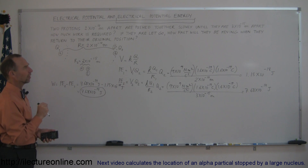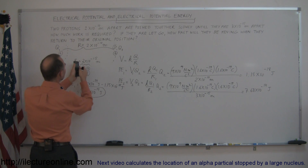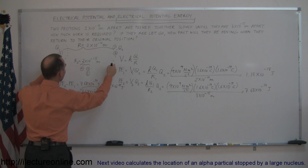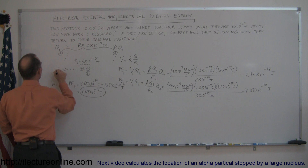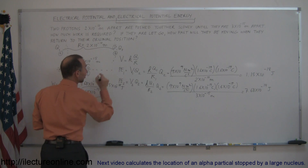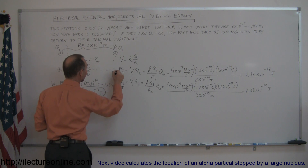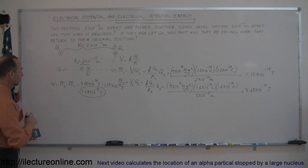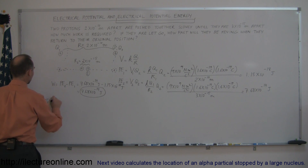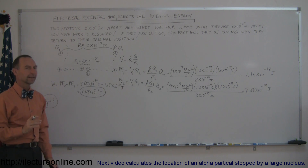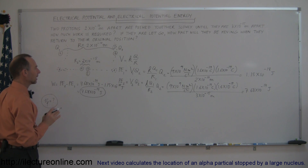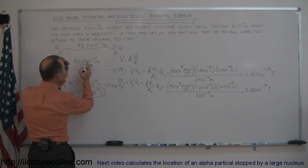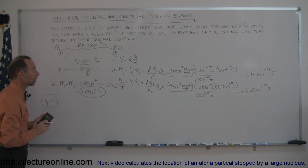Now the second question: how fast will they be moving when we let go and they start speeding away from one another, because there are a lot of forces pushing these two protons apart? When they get back to the original position — they won't stop there, they'll continue at very high velocity — but how fast will they be when they reach that original position? We have a conservation of energy situation: we convert the initial potential energy to the final kinetic energy.